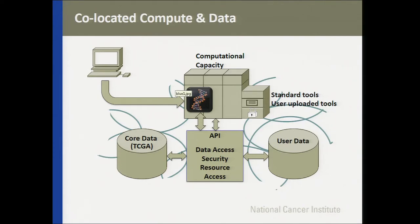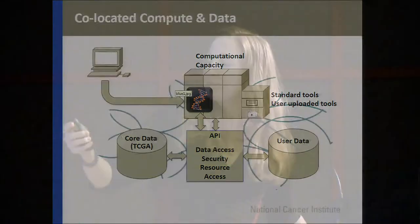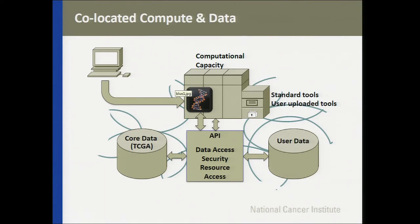The answer is to co-locate all of the compute and data in the cloud. We want to have our core data set — in this case TCGA — along with user-uploaded data. Instead of storing all your data locally, you would upload it to the cloud, which should be much easier than downloading an entire TCGA data set. Standard tools would be available in the cloud, as well as user-uploaded tools. As the user, you would come to the cloud, do all your analysis, and then download only your results, which should be a much smaller data set than the original.